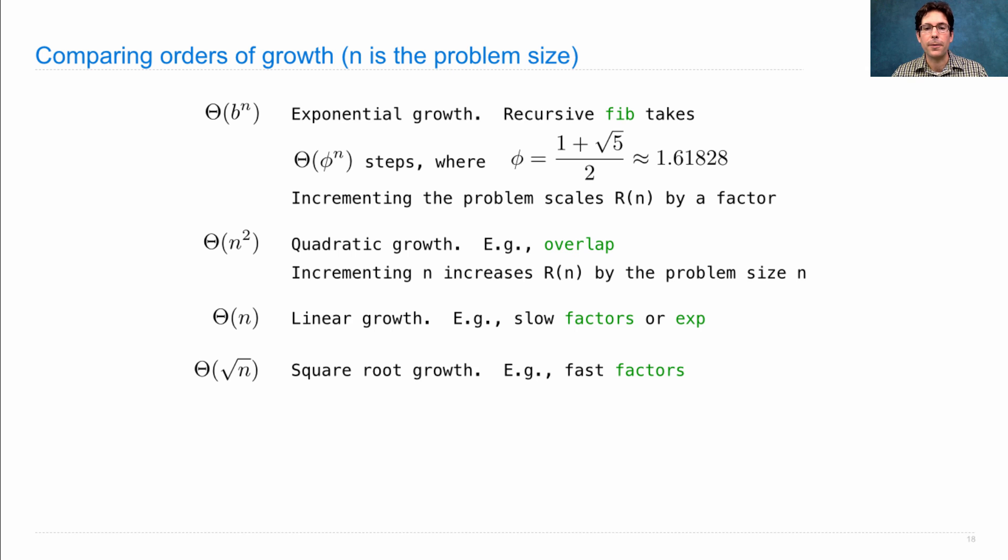Square root growth occurred when we computed factors the smart way. And that's a different category from theta n.